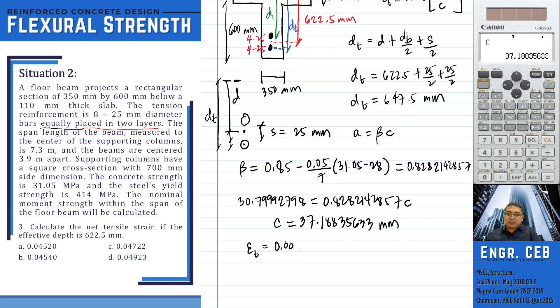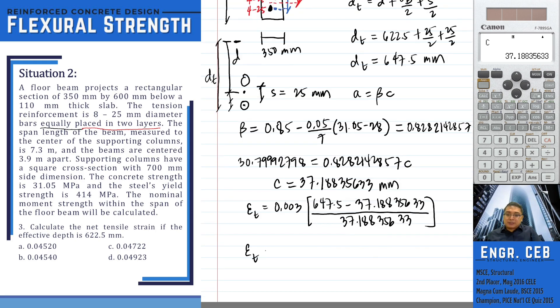That is 0.003 times 647.5 minus 37.18835633 over C. Therefore, the net tensile strain is 0.0492340913. And that is letter D.